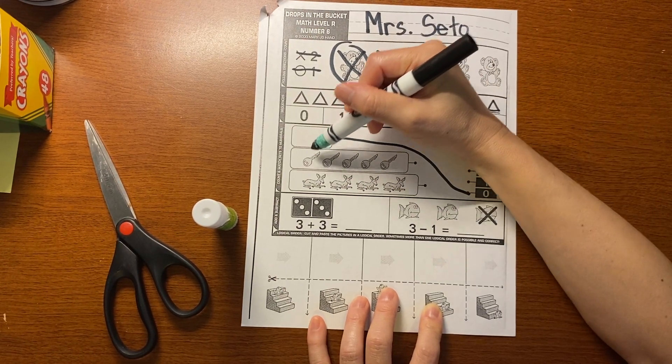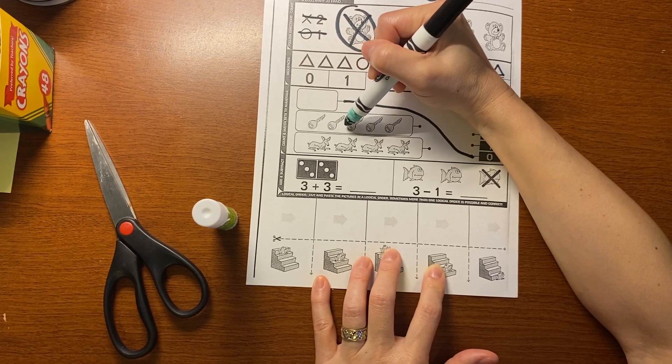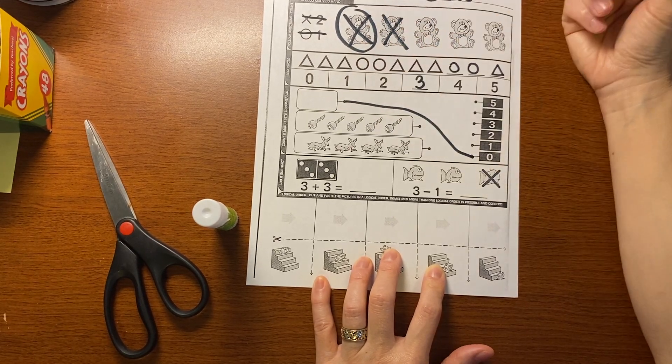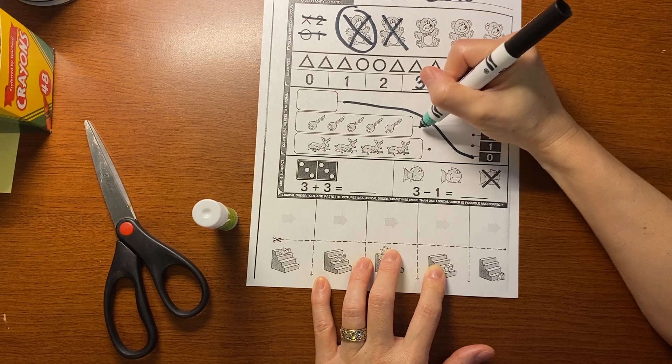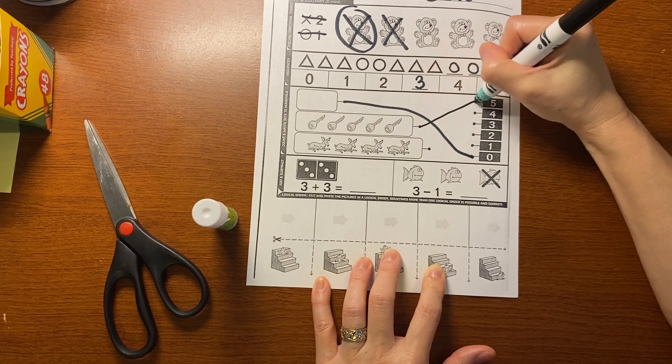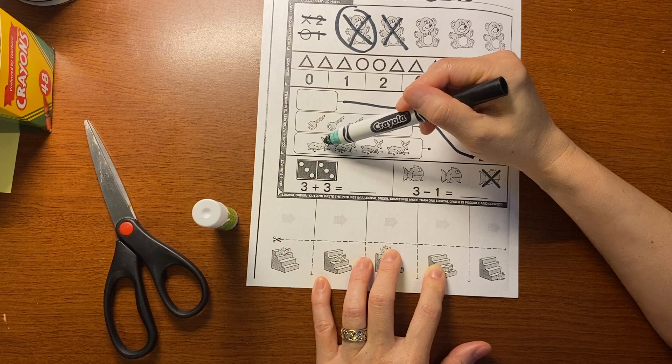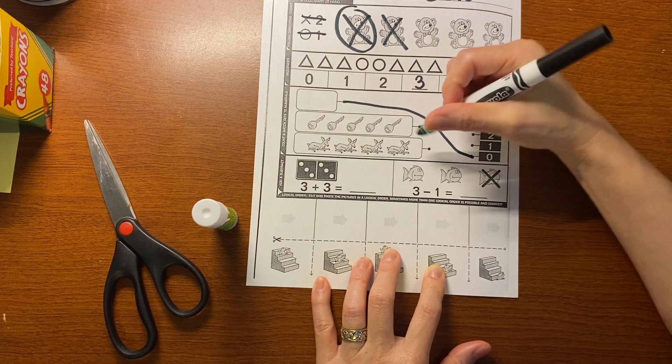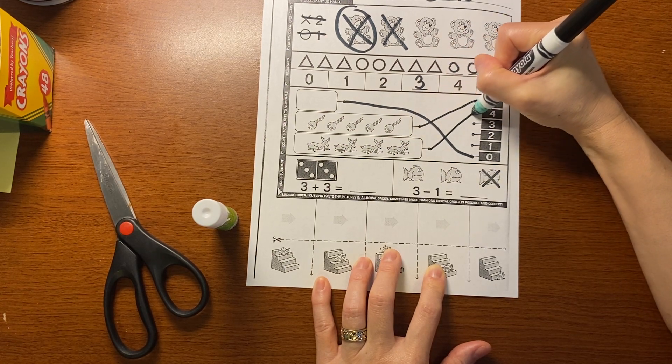I'm going to count the keys. One, two, three, four, five. I'm going to match it up to five. And we're going to count the deer. One, two, three, four.